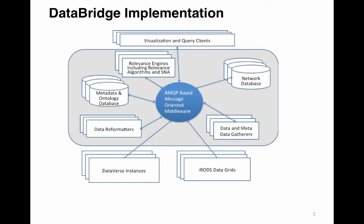Services to reformat data files can independently access the network database and generate standard representations for the information. Relevance engines can also independently access the network and metadata databases and identify common communities. This approach makes it easy to add new information sources, new relevance engines, new metadata structures, and new data reformat services. The intent is to build a generic infrastructure that can be applied across all disciplines.